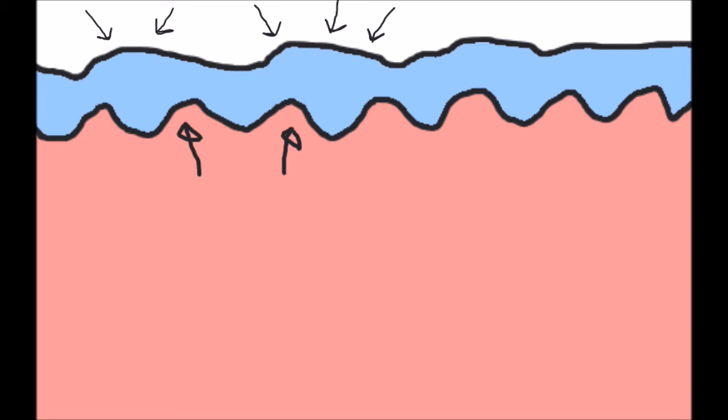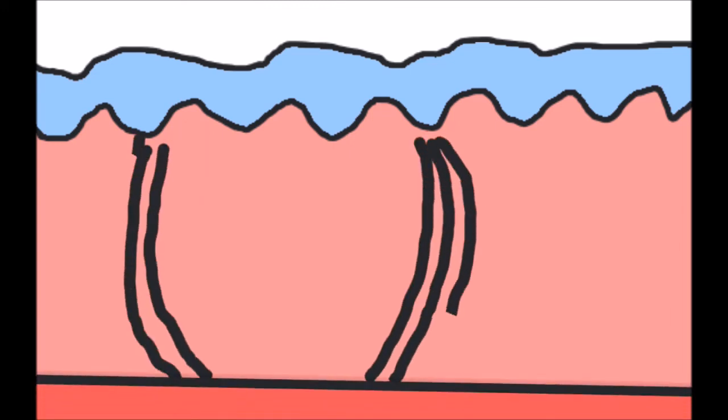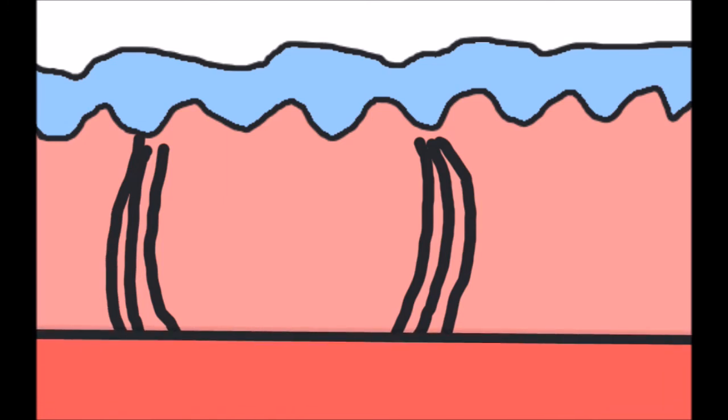Palm creases, on the other hand, are regions where there is extra connective tissue anchoring the skin down to subcutaneous tissues such as muscle.